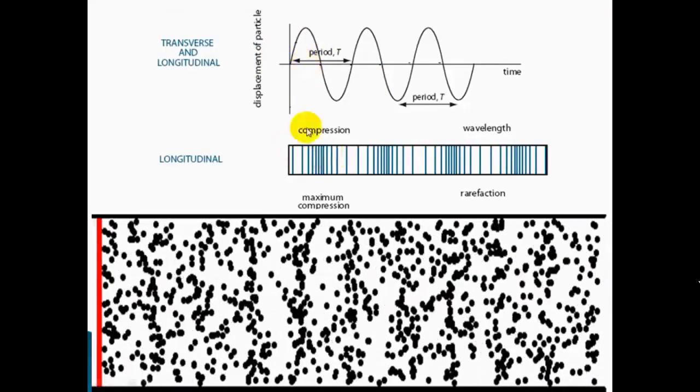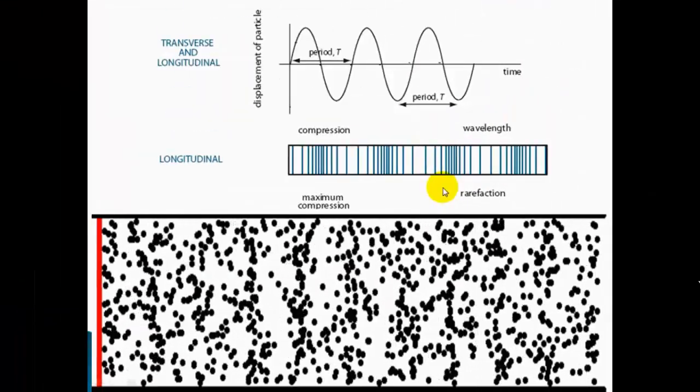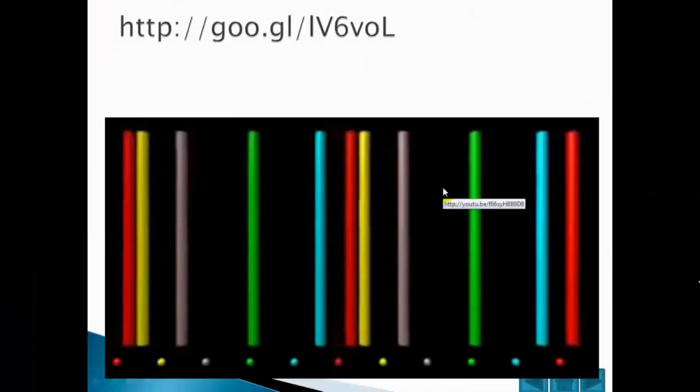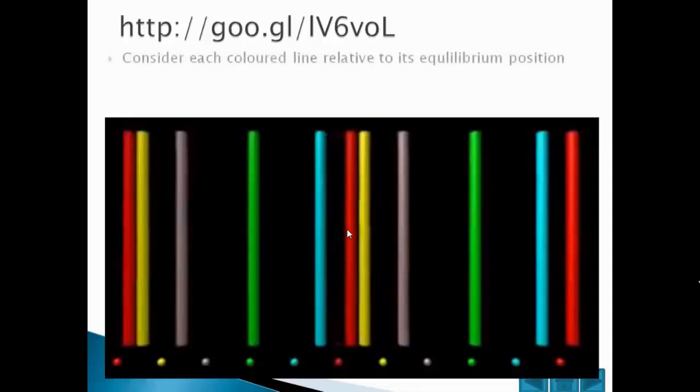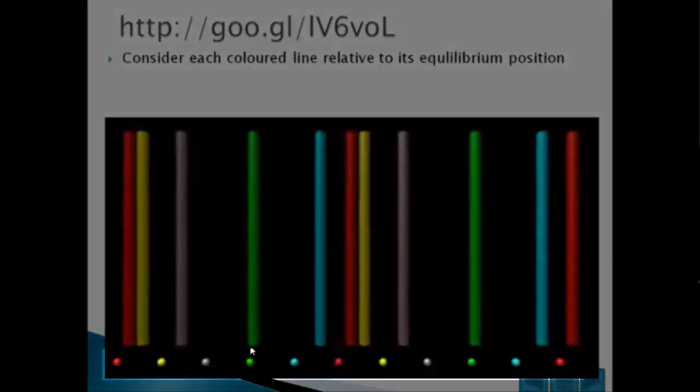Here you can see how the areas of rarefaction and compression are propagated from left to right through the medium. Notice that any particles only oscillate by a small amount from side to side. This graphic illustrates how the compression and rarefaction vary through the medium. Different particles in the medium are represented by different colours which oscillate around their own equilibrium point. The dots across the bottom represent the equilibrium positions of each of the coloured lines.